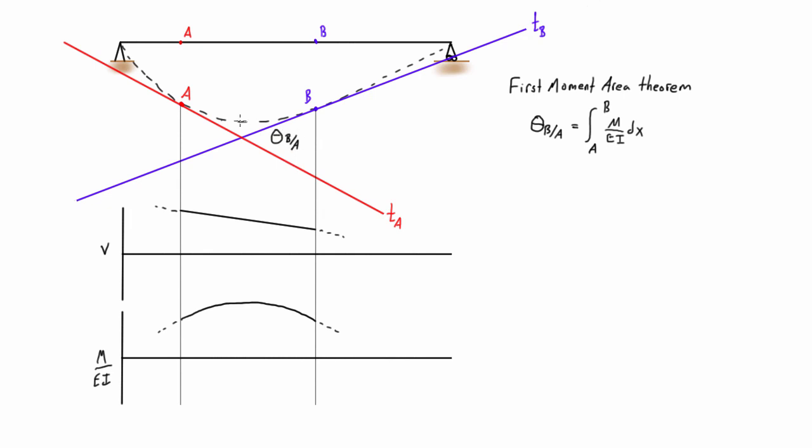So when we want to find this relative slope between points A and B, all we do is find the area here of the M over EI diagram, and that's basically this integral. It's just saying that the relative angle, or the change in angle between these two points, is just equal to the area of the M over EI diagram, or the integral of that expression from A to B. Now, if we're looking at a different section, maybe from the midpoint to the right-hand side, then A would be in the middle, and B would be on the right-hand side, and then the area that we're considering would be shifted. So we're only talking about the area between the two points of interest, not necessarily the entire area of the M over EI diagram.